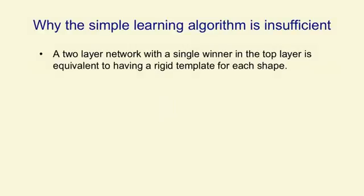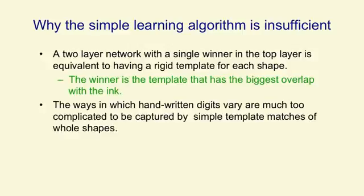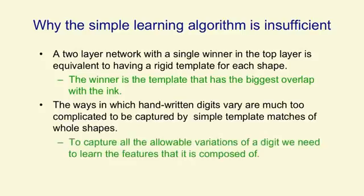One thing about this learning algorithm is because the network's so simple, it's unable to learn a very good way of discriminating shapes. What it learns is equivalent to having a little template for each shape and then deciding the winner based on which shape has the template that overlaps most with the ink. The problem is that the ways in which handwritten digits vary are much too complicated to be captured by simple template matches of whole shapes. You have to model the allowable variations of a digit by first extracting features and then looking at the arrangements of those features.